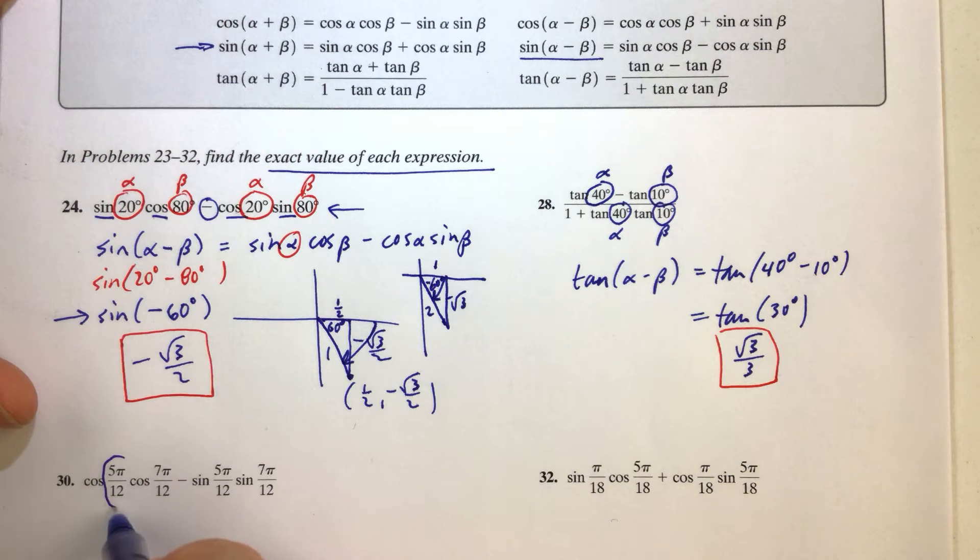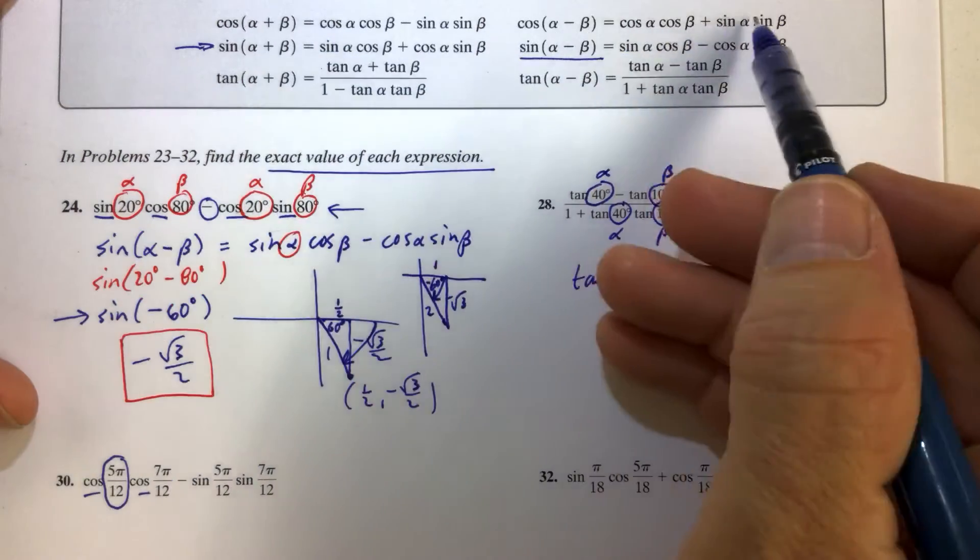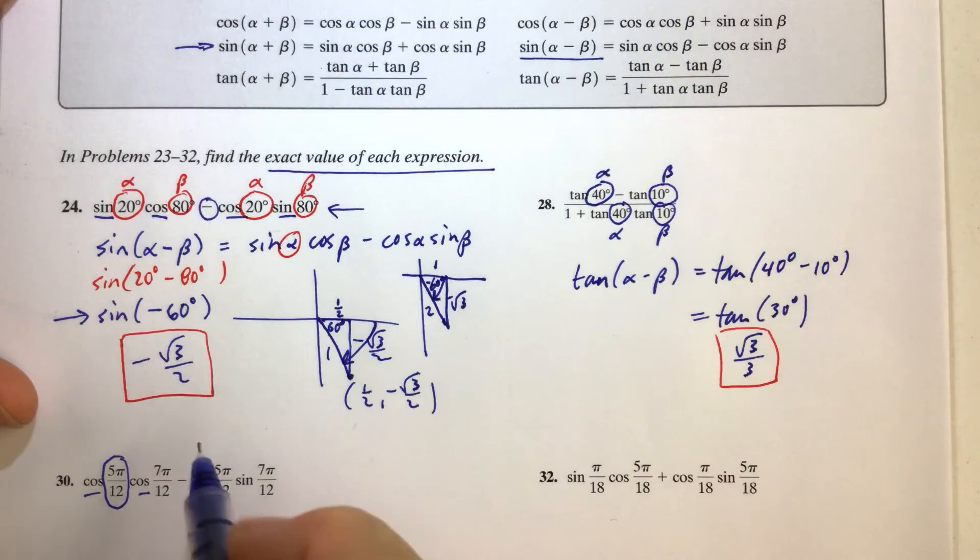And again, we have cosine cosine, so we know we're going to be using one of the cosine formulas. When we have a minus sign in between, so cosine cosine minus sine sine,